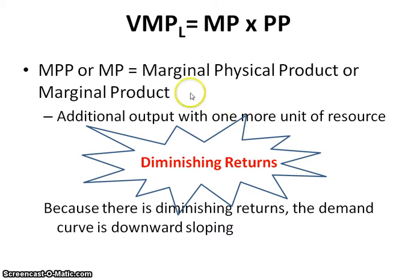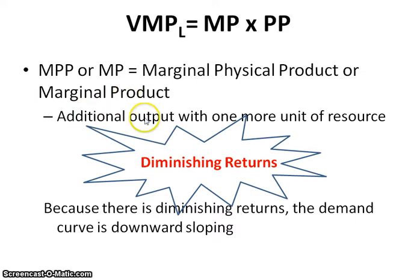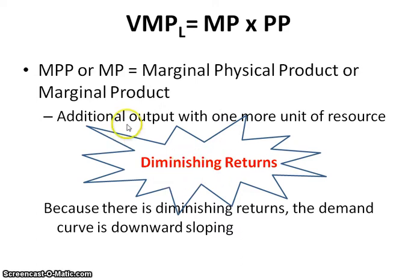That's what we will eventually get into. One of the reasons why the demand for labor is downward sloping is because of marginal product. Marginal means additional unit of; product means output. So marginal product is the additional output from hiring one more unit of labor or one more unit of a resource. The reason it is downward sloping is because of diminishing returns — that's the why.